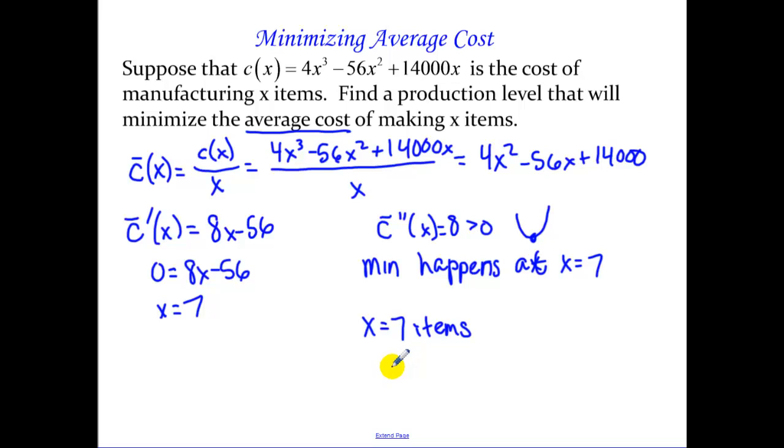That may not seem like a lot, but we don't know what type of items we're minimizing. Maybe that's 7 airplanes, thinking of something kind of drastic. And that is how we do a minimizing average cost problem.